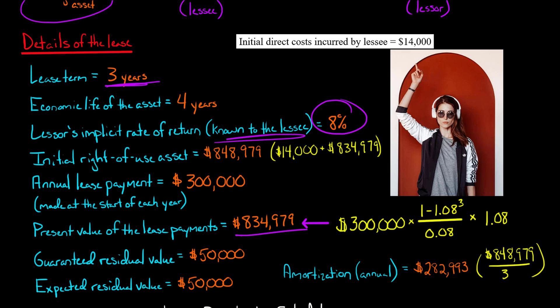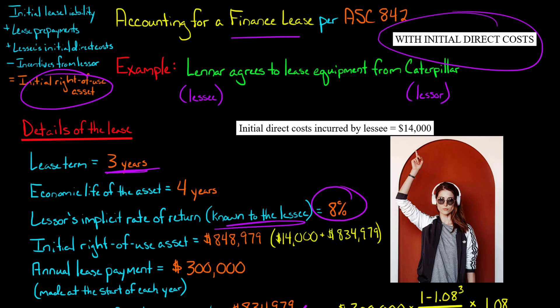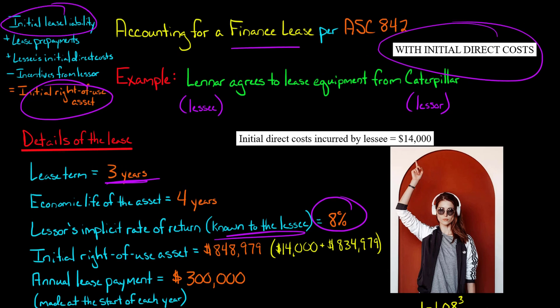You might be wondering how that is relevant to the calculation of our initial right of use asset. Well, this is going to be the starting point — our initial lease liability is going to be the starting point in calculating the initial right of use asset. In the previous video, the initial lease liability and the initial right of use asset were identical. But if you have lease prepayments, initial direct costs, or incentives being received by the lessee from the lessor, those things can change the initial right of use asset and make it such that it's not the same amount as the initial lease liability.